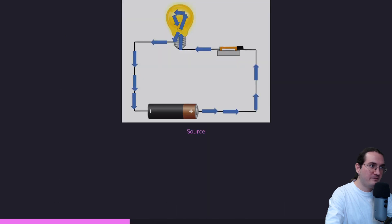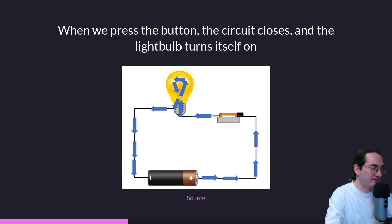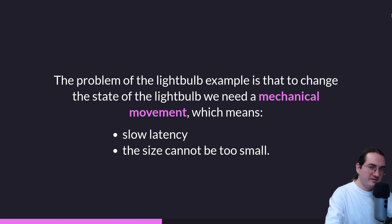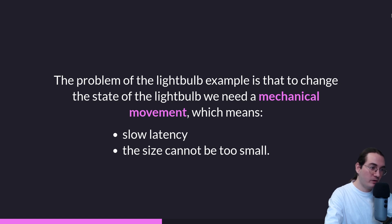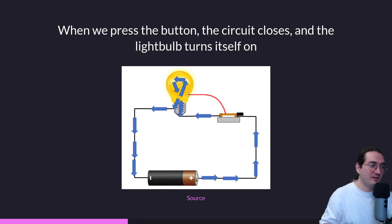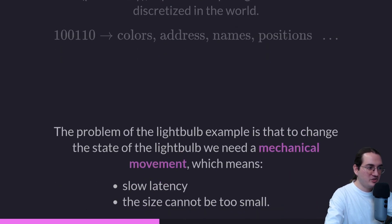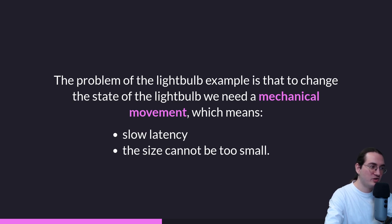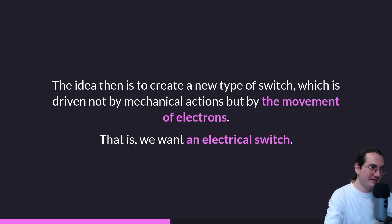We could already sort of build a computer made of light bulbs turned on by physical switches. But there is a problem: the main issue is that we control the light bulb through a mechanical switch, and mechanical movement is slow and cannot be made too small. Essentially we have slow latency — the time from pressing the switch to the light bulb changing state could be seconds, which is a lot. A mechanical switch is just too slow.